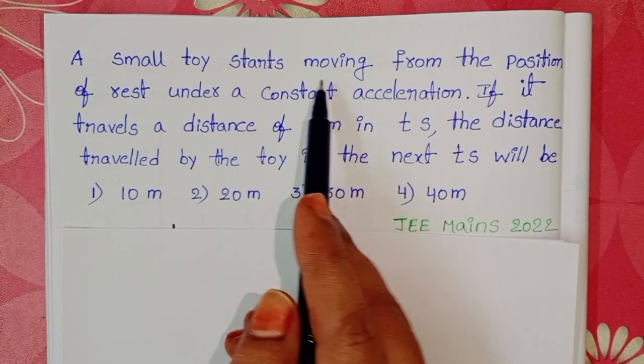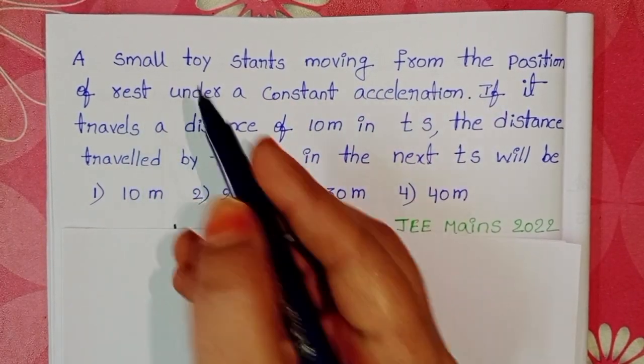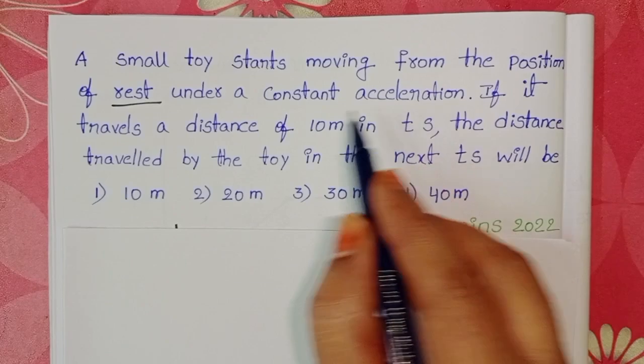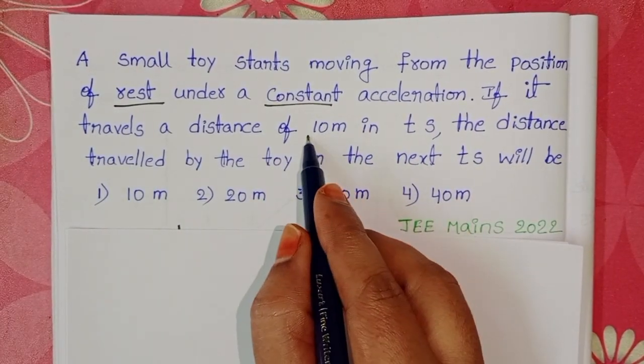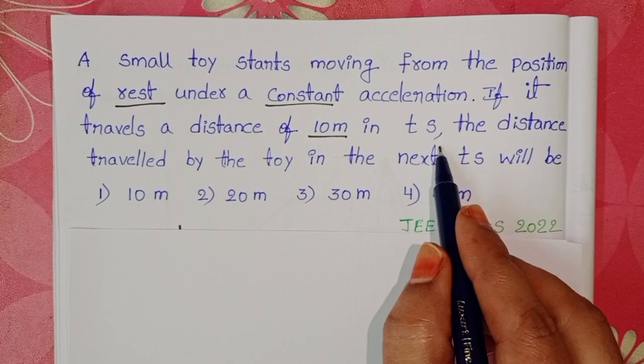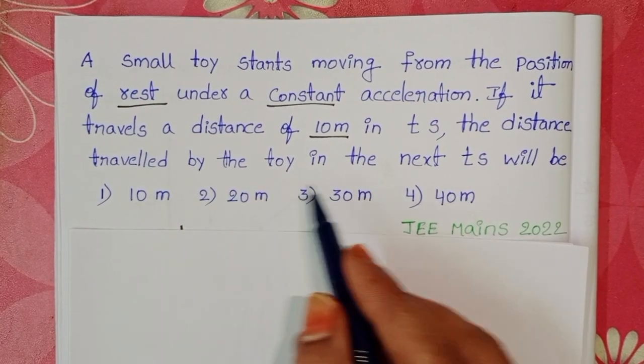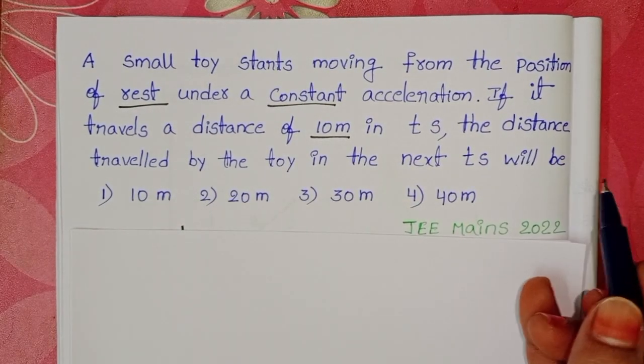A small toy starts moving from the position of rest under a constant acceleration. If it travels a distance of 10 meters in t-seconds, the distance travelled by the toy in the next t-seconds will be.